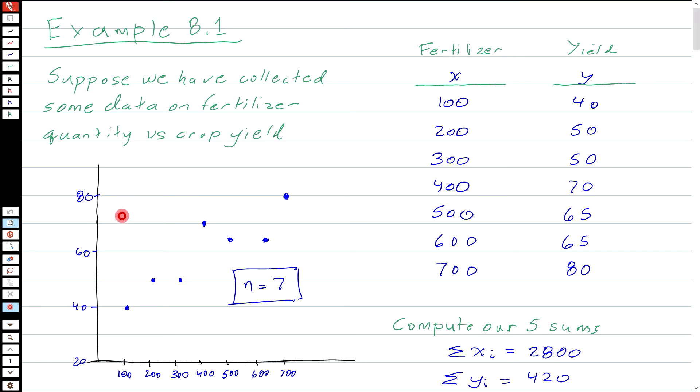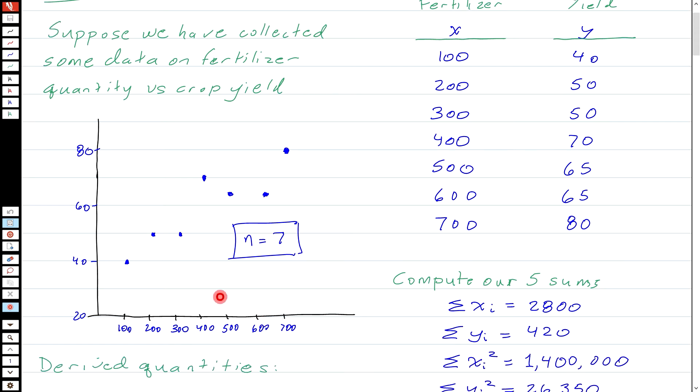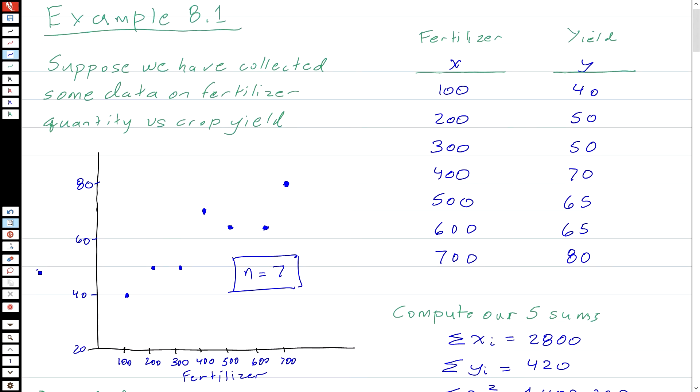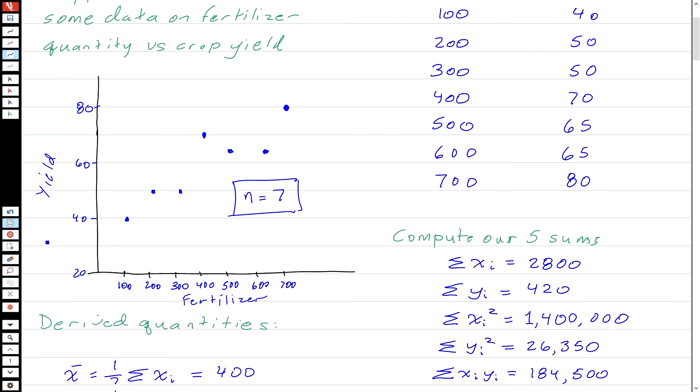As we mentioned the other day, here's a plot of what we see here. We have seven observations. So N is seven, and I've just plotted them here. And you can see that there's some variability, but there seems to be a fairly strong trend between the fertilizer quantity and the crop yield. I believe I better label these things. So this is fertilizer and this is yield.